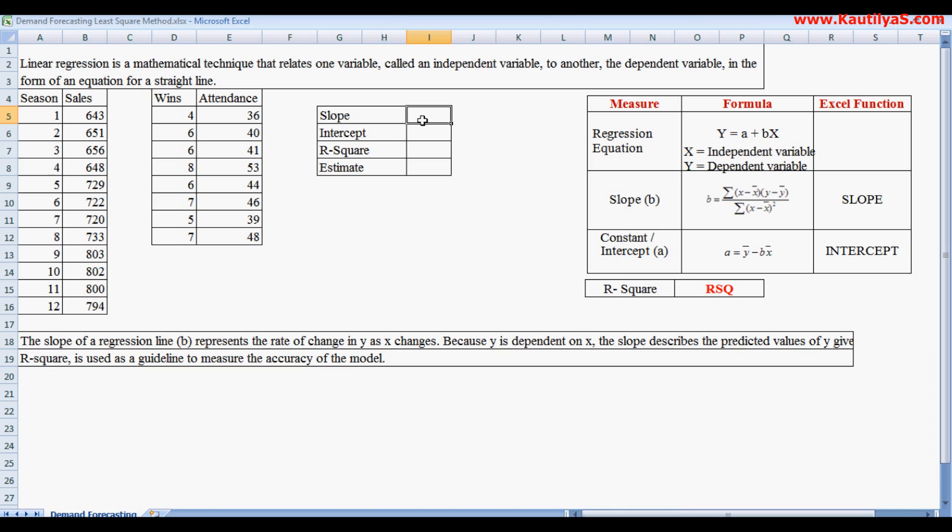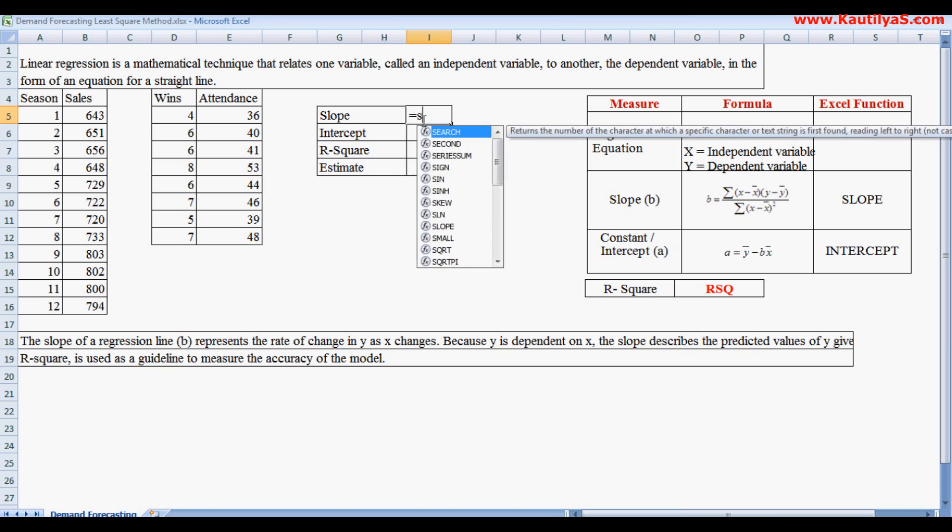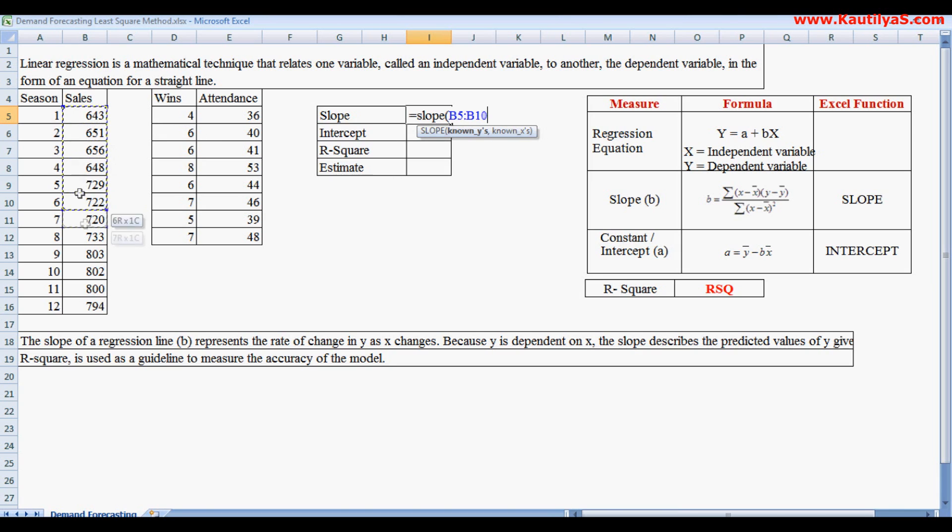First we calculate the slope of a regression equation. Equals to SLOPE. It prompts you to give the known Y values. Y values are dependent values, so sales depends on season. Sales are our dependent values, season is the independent value, and we got the slope.